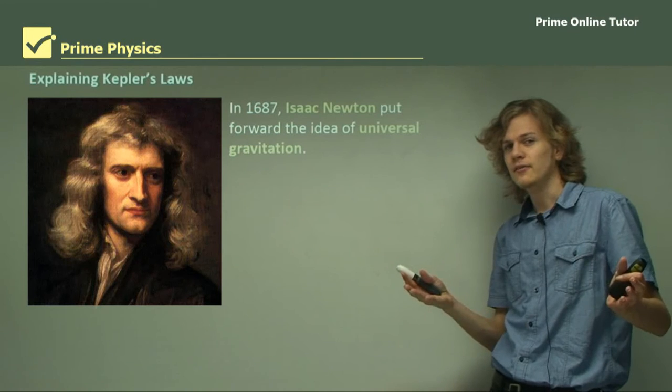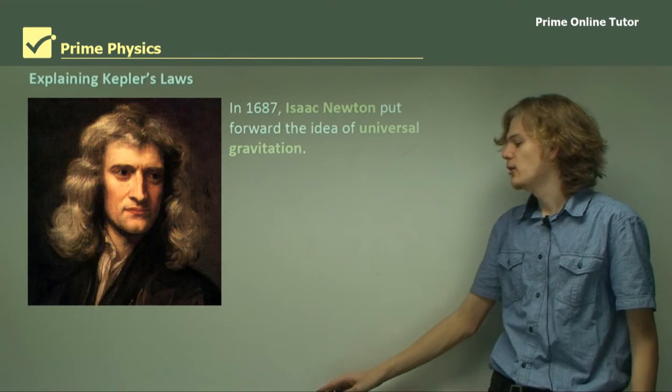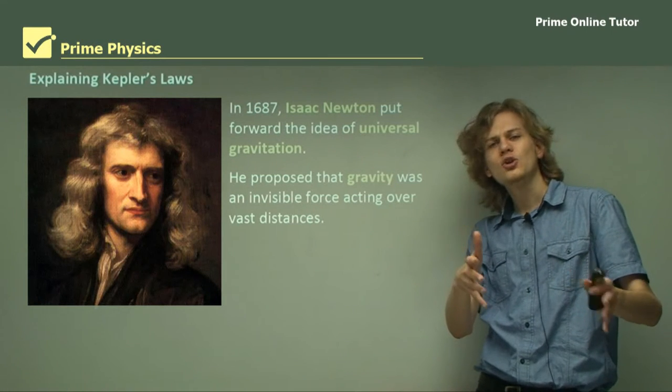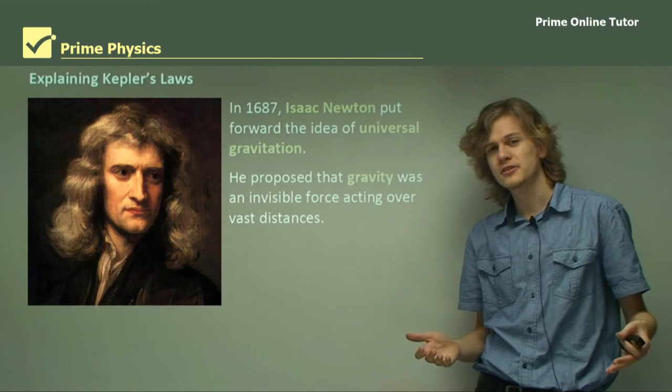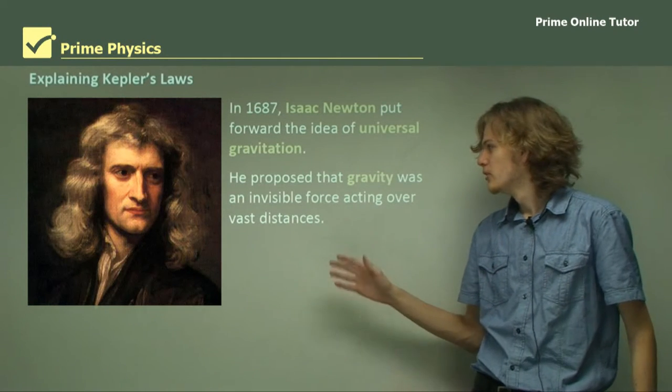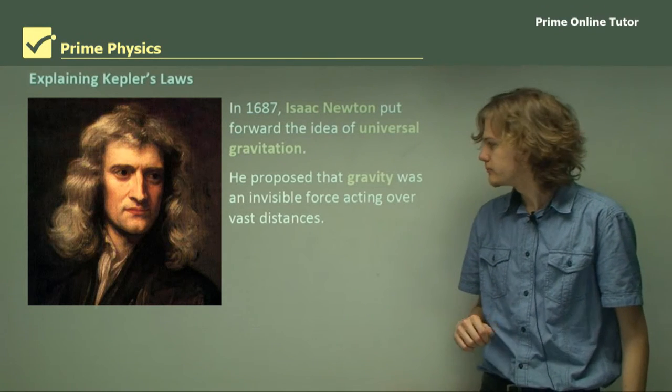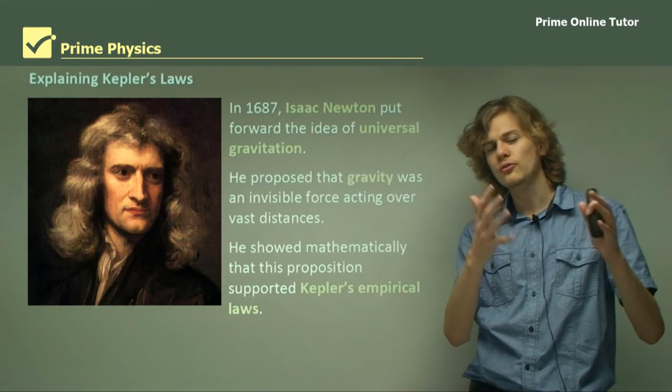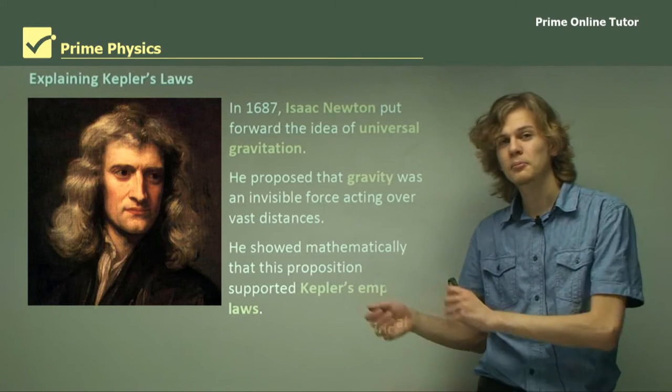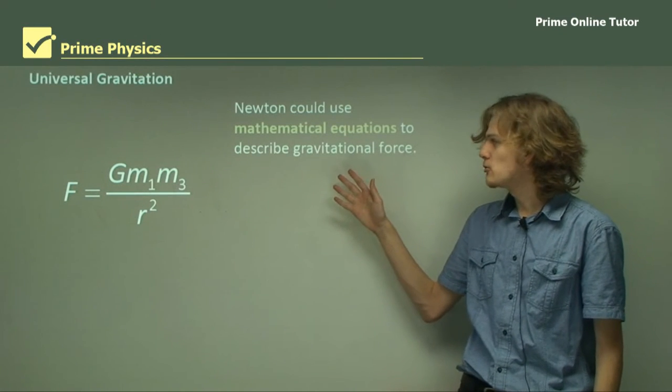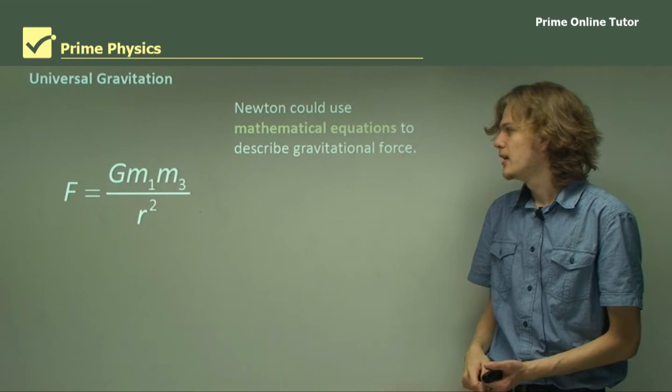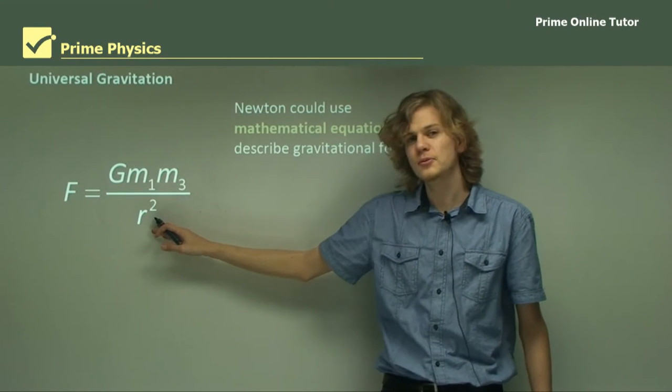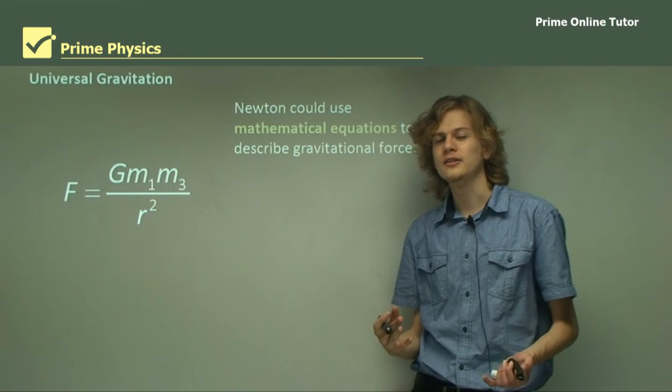In 1687, later on in that century, Isaac Newton put forward the idea of universal gravitation. He proposed that gravity was an invisible force acting over long distances. This went against the current scientific understanding at the time that thought that everything had to be a contact force. This was one of the first non-contact forces. He showed mathematically that his proposition supported Kepler's laws. He said that if the law of universal gravitation held true, then it should explain all the things that Kepler is observing.